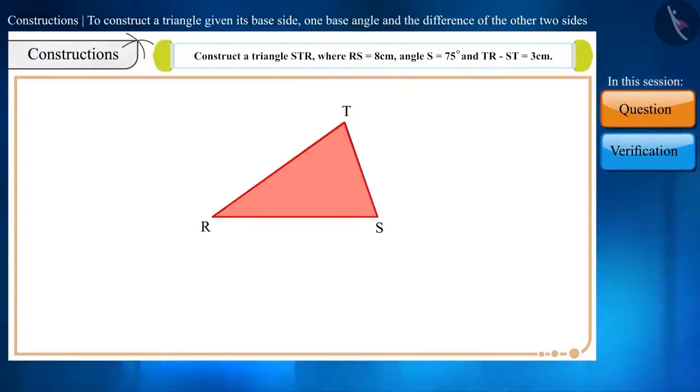Let's see this question. Construct the triangle STR where RS equals 8 cm, angle S equals 75 degrees, and TR minus ST equals 3 cm.